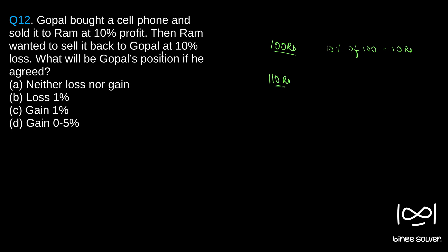Then Ram wants to sell it back to Gopal at 10% loss. So this is the price at which Ram bought it from Gopal. If he sells back his phone for 110 rupees, then there will be 0 gain or 0 loss.